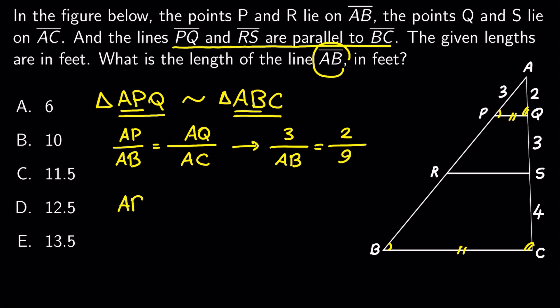We can now calculate AB easily by multiplying 3 by 9, divided by 2, which is 27 divided by 2, which gives us 13.5, and that's it. The answer is E.